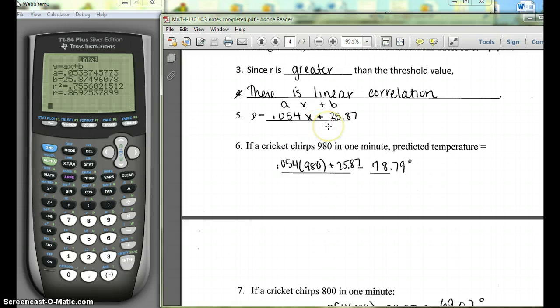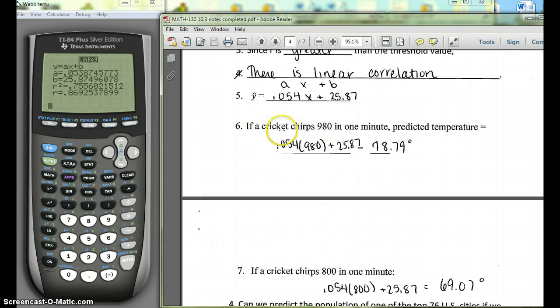Okay, so that's our regression equation. So then it says if a cricket chirps 980 times in one minute, predict the temperature. You put the 980 in for x and you can predict the temperature.